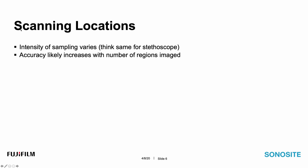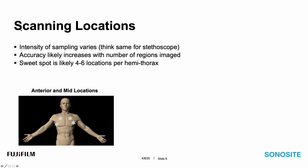Accuracy does increase with the number of regions you image. Some people, rather than imaging in discrete locations, will do something akin to a lawnmower — called bicycling — as they move the probe rapidly across the chest, scanning continuously. This works in real time but is harder to save images for the medical record or quality assurance. The sweet spot for imaging locations is somewhere between 4 to 6 locations per hemithorax.